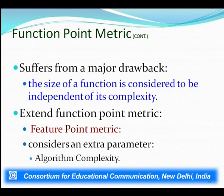The weighted measure for all function types — input, output, inquiries, interface — is calculated. The function point value is calculated by multiplying the Unadjusted Function Point (UAF) by the Technical Complexity Factor (TCF). The function point value can be known by both customer and developer, and both agree upon it. This was proposed by Albrecht and is mostly used in application development software today.